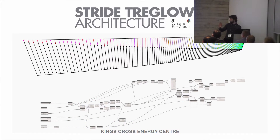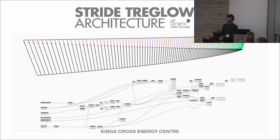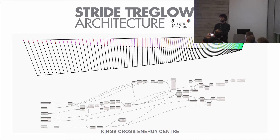Good evening, everybody. I'm Sam Higgins from Strideround Architecture in Manchester, and hopefully we can do just 15 minutes while we whistle through a live job where we've effectively taken a geometric approach to the modelling and the information production at the end. Hopefully it's an insight into the way we can use the geometry engine and Dynamo to plug into Revit.